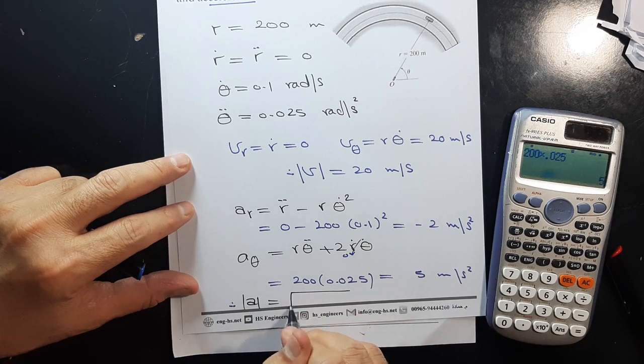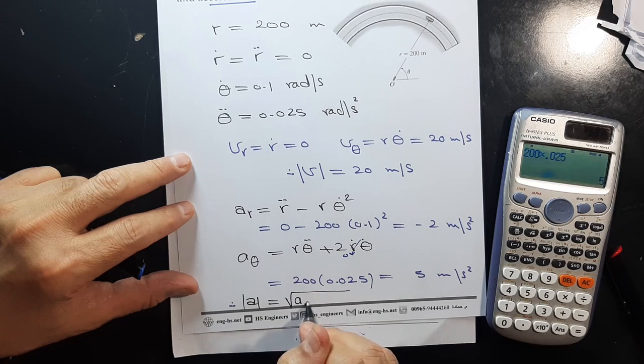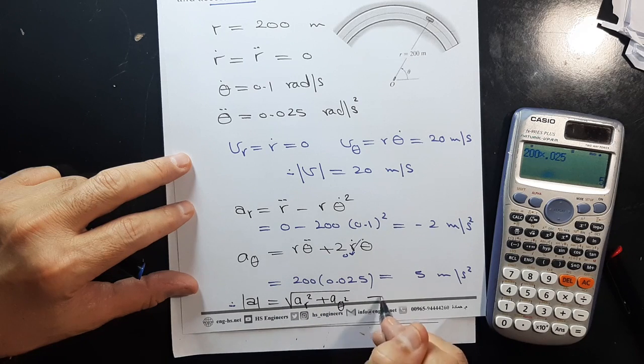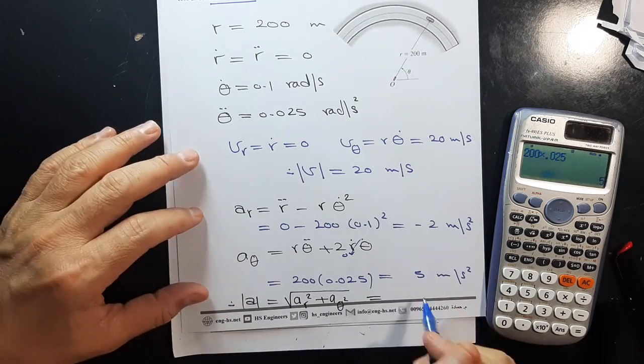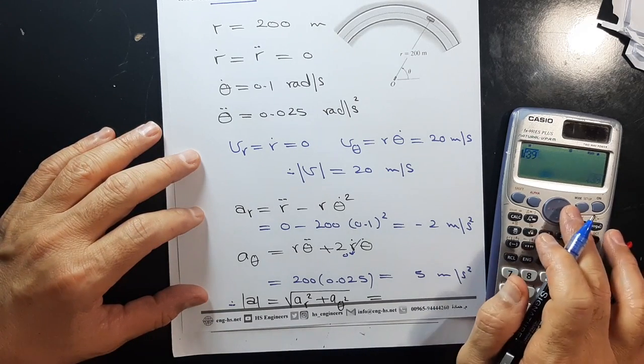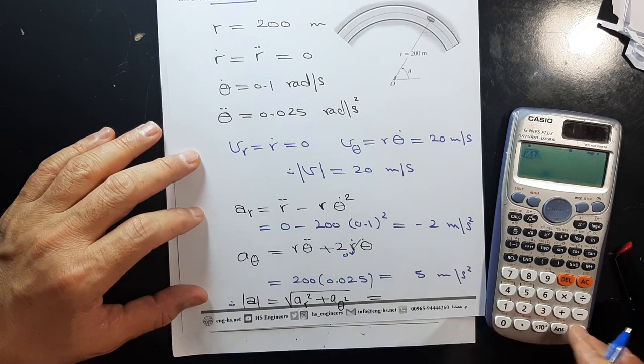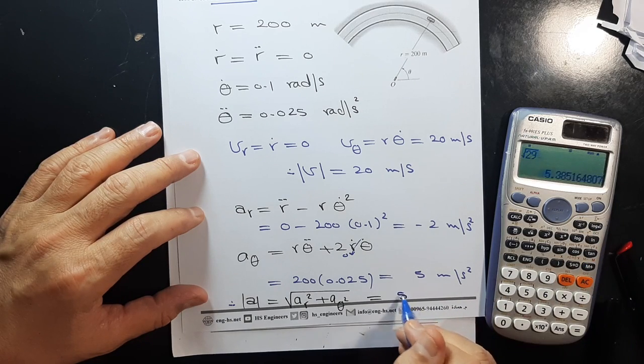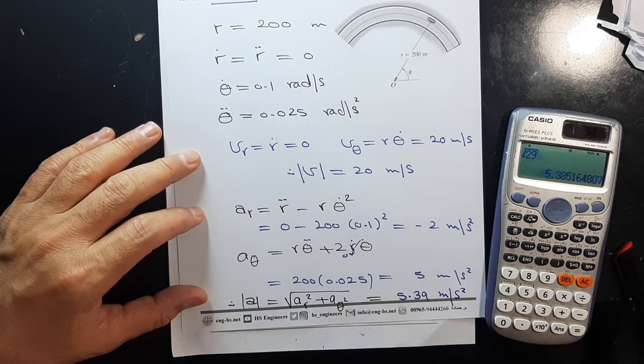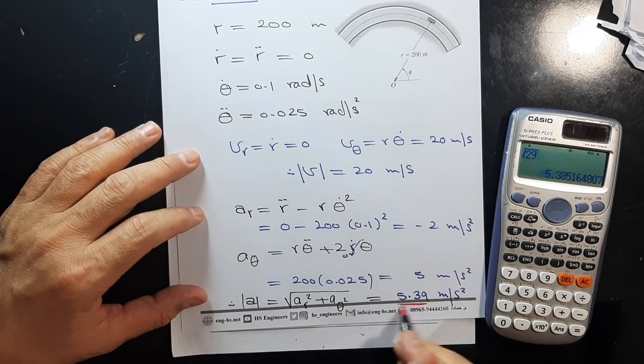The total acceleration a is the square root of ar² + aθ². This equals the square root of 4 + 25 = 29, which gives 5.39 meters per second squared. And that's what was required.